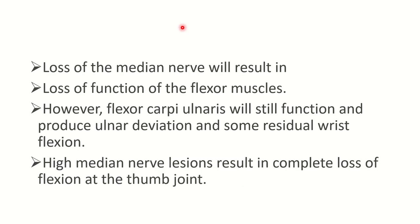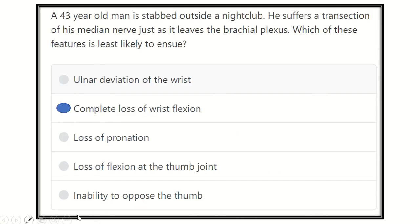If injury occurs to the median nerve, loss of function results in loss of all forearm flexor muscles except two and a half muscles. The flexor carpi ulnaris will remain functional as it is supplied by the ulnar nerve, so ulnar deviation of the wrist occurs. With high median nerve injury, there is usually complete loss of flexion at the thumb joint. Complete loss of wrist flexion will NOT occur because some forearm flexors are supplied by the ulnar nerve.